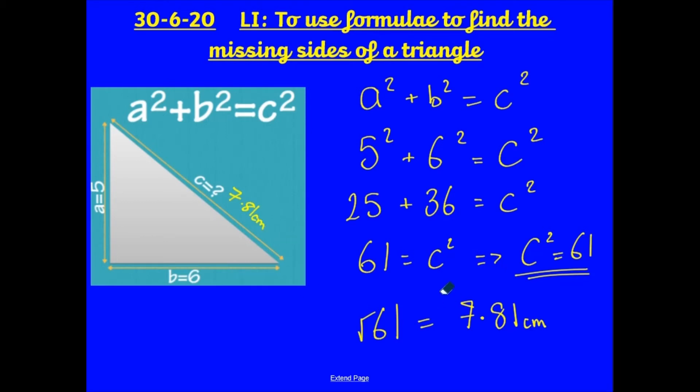So, c = 7.81 centimeters. And that is how I find out the missing side. Remember, when you've done your a² + b², and you've found out what c² is, you will need to find the square root. And you can use a calculator for this if you want to. So, that means that 7.81 times 7.81 will give me 61, or close enough, because there are a lot of decimal numbers there.